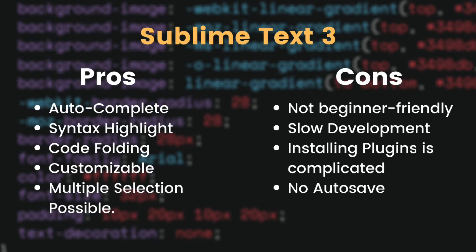The cons of Sublime Text: it is not very beginner-friendly — you need to give some time to understand how to use it. Even though it is fast and lightweight, the development pace is a little slow and plugin installation is also a bit complicated. Also, there is no auto-save function, which can cause loss of code if your PC shuts down unexpectedly.